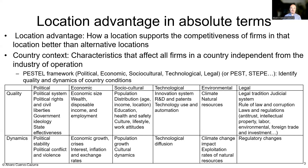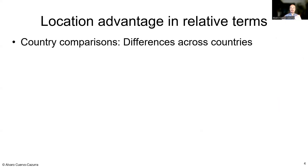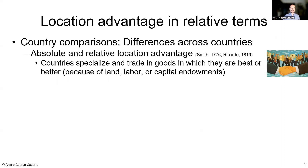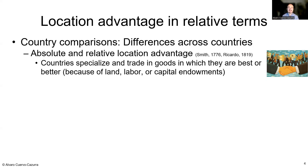We can draw on traditional economic theories, starting with the concept of absolute and relative advantage. The idea from economics is that some countries are better than others. If a country has certain endowments — a better-educated population, more productive land for particular agricultural products, more capital and machinery — then companies and countries should specialize in creating products that take advantage of these conditions. The original idea goes back to Adam Smith, who focused on absolute advantage: whether you are truly the best.